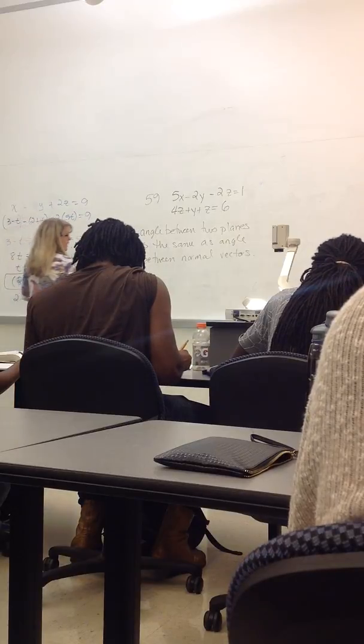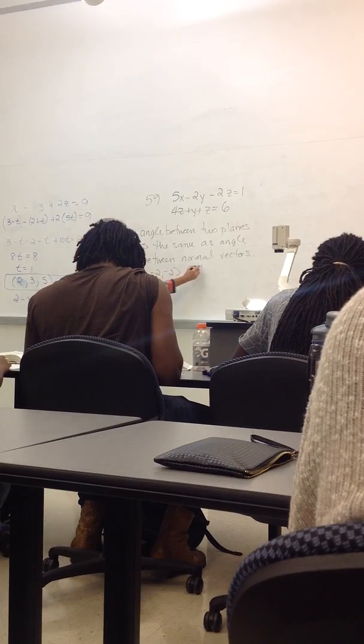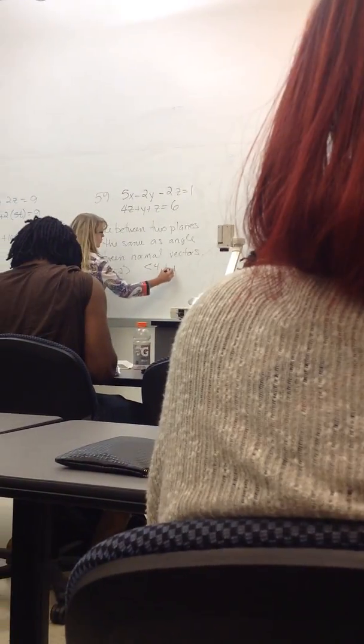Okay, so my one normal vector is 5, negative 2, negative 2. The other normal vector is 4, 1, 1.